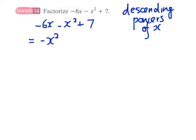Therefore, we can rearrange it this way: -x² - 6x + 7. But we have a minus term here—we have -x² which is a bit troublesome for the cross method to work. We can simply take out the common factor of -1.